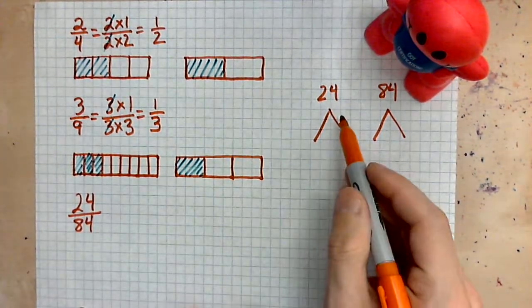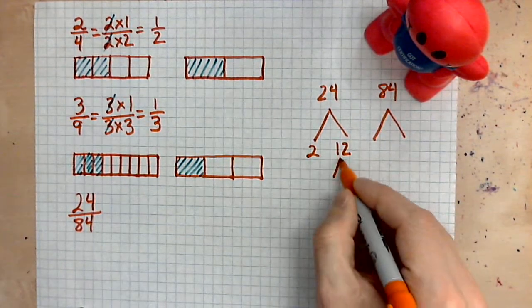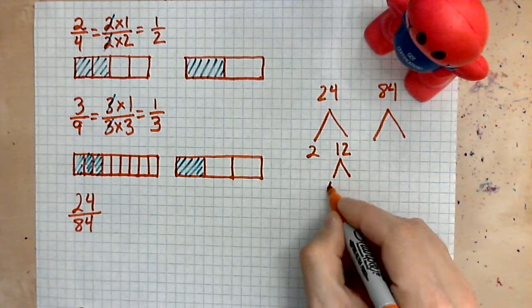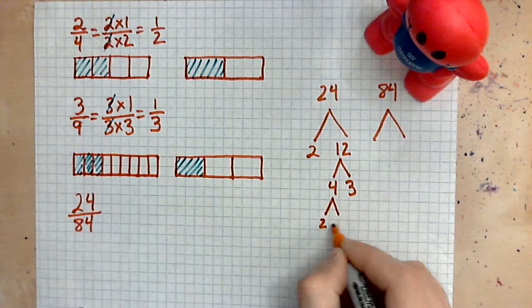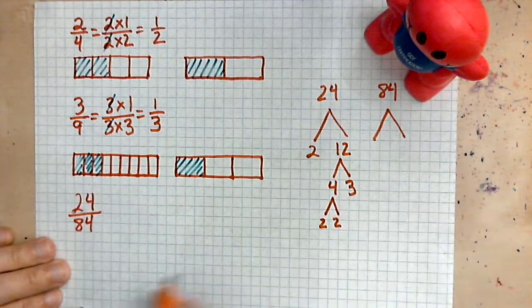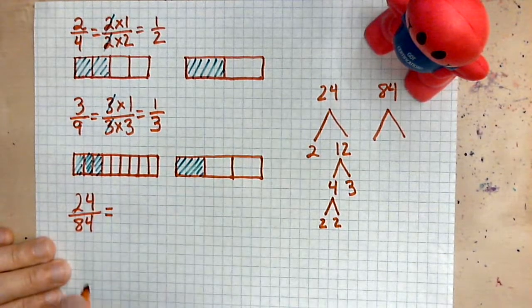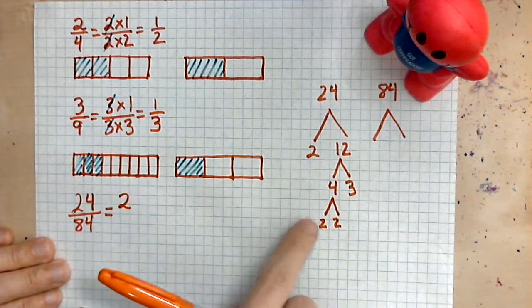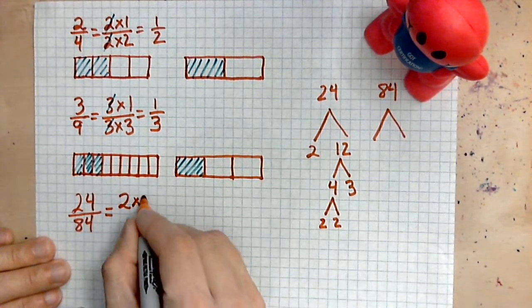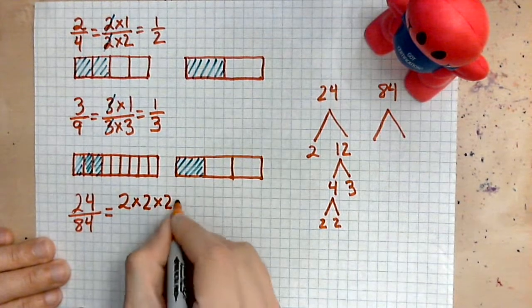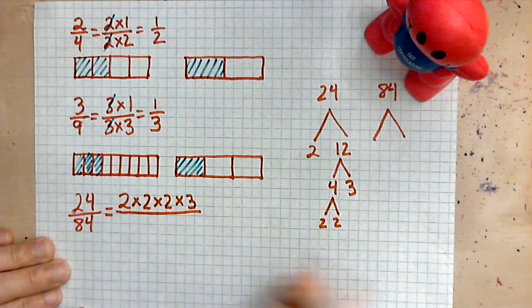So let's take a look. What we have is 24 can be written as 2 times 12. 12 can be written as 4 times 3. And then this 4 can be expressed as 2 times 2. So what this allows us to do is the following. We can take the number 24 and we can rewrite it simply as that 2 times that 2 times that 2 times that 3. There we are.